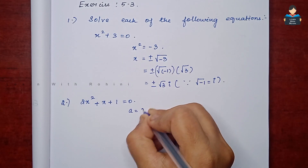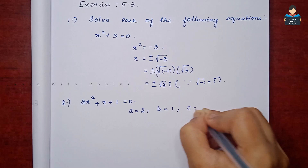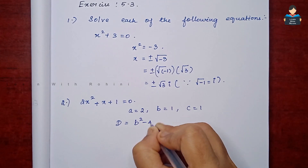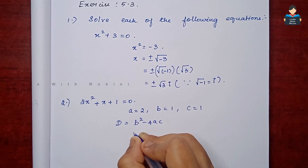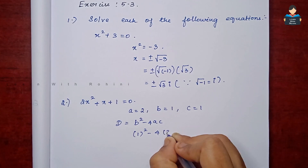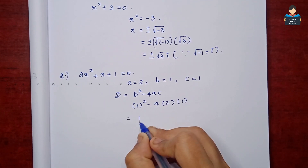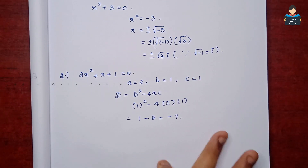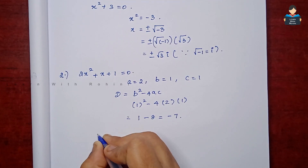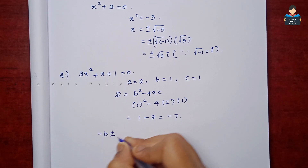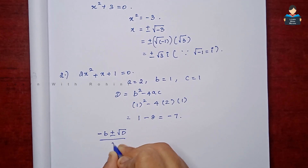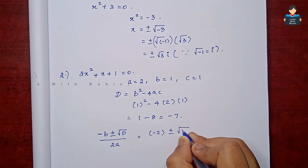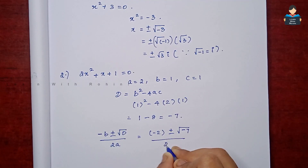For the second sum, a = 2, b = 1, and c = 1. The discriminant D = b² - 4ac = 1² - 4×2×1 = 1 - 8 = -7. Applying the quadratic formula: x = (-b ± √D) / 2a = (-2 ± √(-7)) / (2×2).